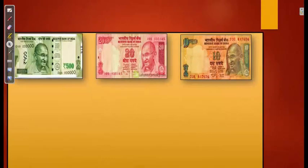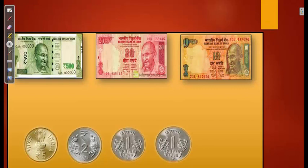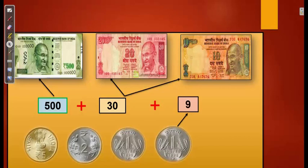Here we have 500, 20, and 10 Rupees notes, plus 5 Rupees, 2 Rupees, and 2 coins of 1 Rupee. We keep 500 as it is. Adding 20 plus 10 gives 30 Rupees. For the coins: 5 Rupees plus 2 Rupees makes 7 Rupees; adding 1 gives 8, and adding 1 more gives 9. All 4 coins equal 9 Rupees. So 500 plus 30 plus 9 equals 539 Rupees.